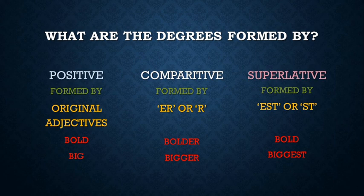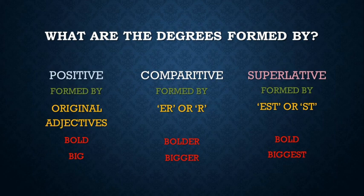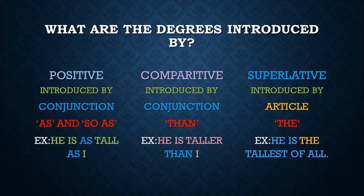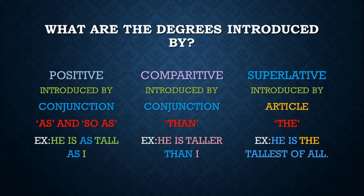Positive degree is formed by the original adjective — for example, bold, big. Comparative is formed by adding -er or -r: bolder, bigger. Superlative is formed by adding -est or -st: boldest, biggest. The positive degree is introduced by the conjunction as — he is as tall as I. Comparative is introduced by than — he is taller than I. Superlative is introduced by the article the — he is the tallest of all.